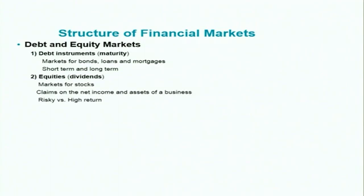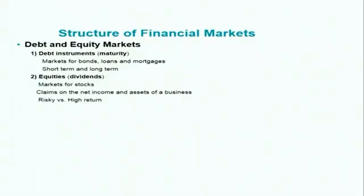The second market is called equity markets — markets for stocks. In the case of the stock market, the owners, those who buy stocks, have claims on the net income and assets of a business. So we have these two types of instruments: the debt market and the equity market.